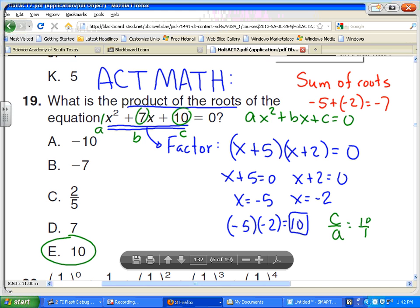Or if they were asking for the sum of the roots, you could have done the sum of the roots is negative b over a. And in this case, you could have taken negative 7 over... Actually, the sum of the roots would just be negative 7 because b is 7. So negative b would have been negative 7 over a, which is 1.